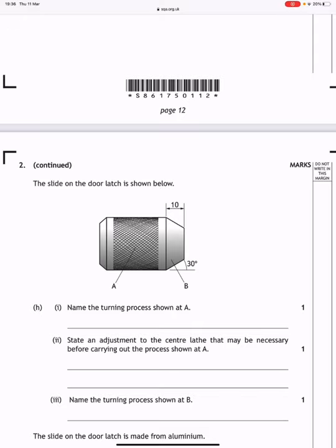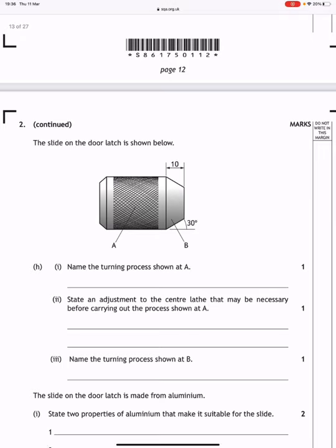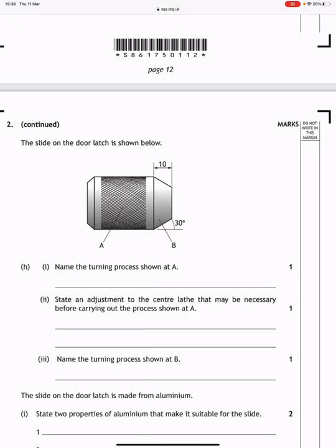The slide on the door latch is shown below. Name the turning process shown at A. Well, that's knurling. State an adjustment to the center lathe that may be necessary before carrying out the process shown at A. Well, you have to knurl at a slow speed, so you might have to reduce the speed of the lathe.